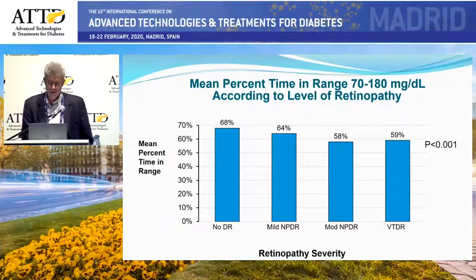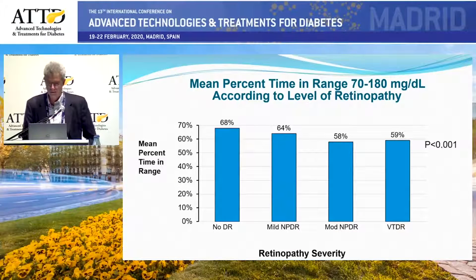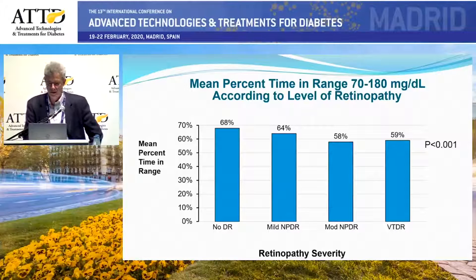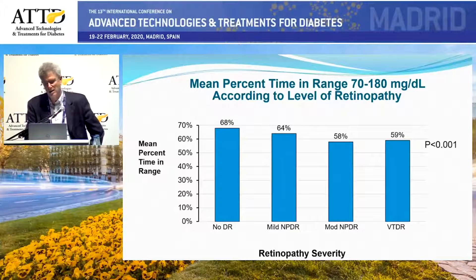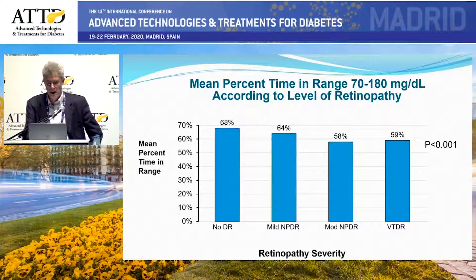They actually had a time in range of 67% as a group — quite discordant from the A1C of 8.9%, which as Earl showed would be associated more with an A1C of around 7. The only explanation would be that those three days changed behavior and participants had better control during those days than over the rest of three months. Irrespective of that, we see statistically a pretty strong association between percent time in range and severity of retinopathy, with a gradual decrease as severity gets greater.